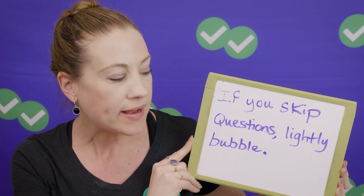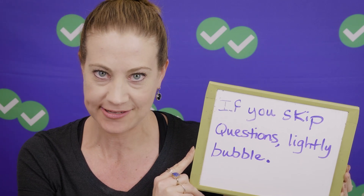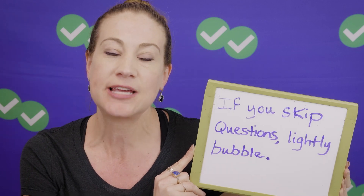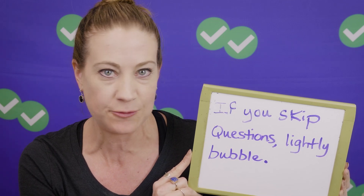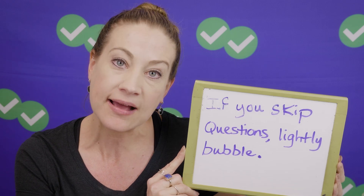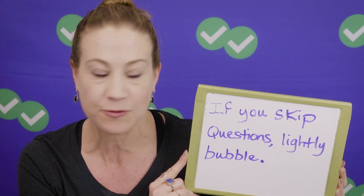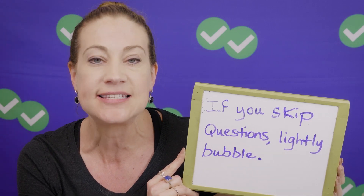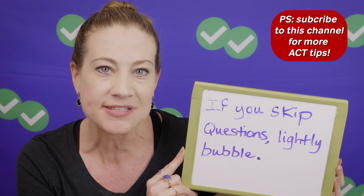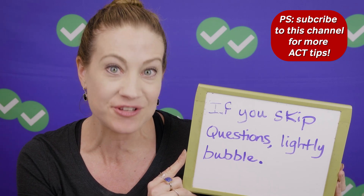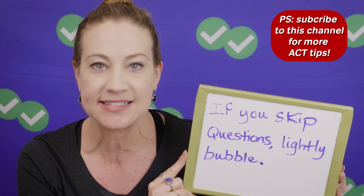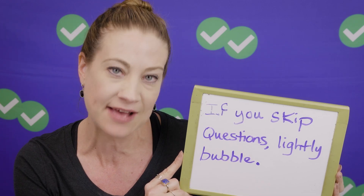If you skip questions — and I recommend that you do in many cases — one tip you might not have heard is to lightly bubble. Before you skip the question, go ahead and just answer it; take your best guess but make that bubble a little bit lighter than you normally would. The idea is that you can come back and see that slightly lighter bubble, knowing that question might deserve more attention. However, if you run out of time, it's still dark enough that the Scantron is going to pick it up. Somewhat lightly shaded bubbles are still going to register, so it's a nice system for figuring out which ones you might want to spend more time on.